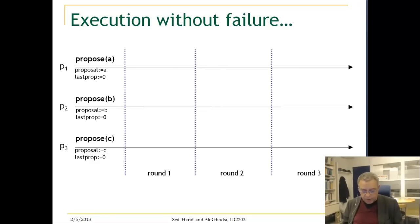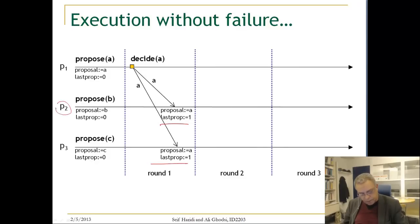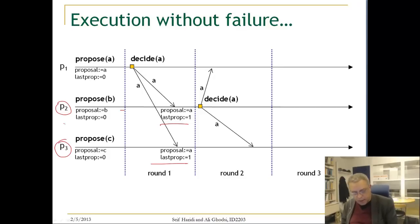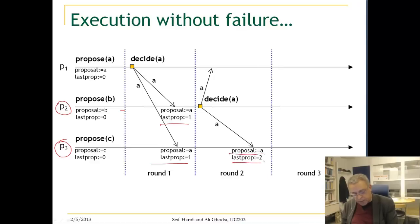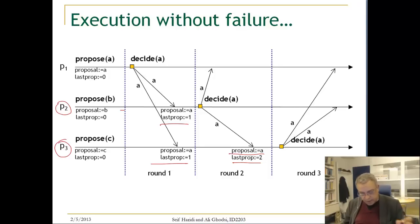Let us look at an execution without failure to understand this again. P1 proposes A with last_prop number 1. Both P2 and P3 move to round 2. P2 has adopted P1's proposal, so it decides on A and again proposes A. P3 adopts this proposal because it has a higher proposal number than the one it adopted before, and then also decides on A. So that is correct.